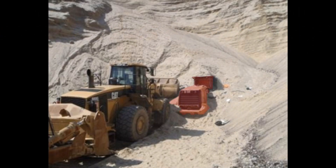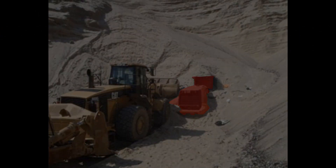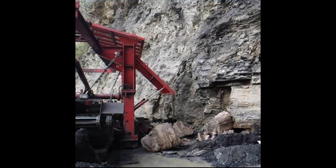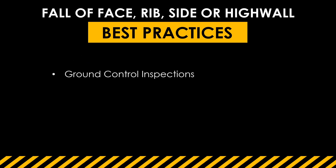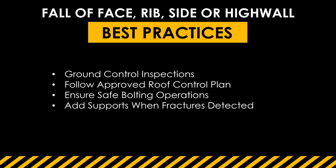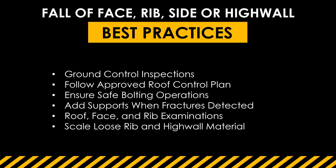You can barely see his machine in the photo. Another example: at a coal mine, a 33-year-old miner was struck by a rock that fell from the bottom section of the high wall while he was changing cutter heads. Best practices for avoiding these fatalities include employing ground control inspection procedures at all times, following approved roof control plans, ensuring safe bolting operations on a specified interval, adding supports when fractures are detected, performing examinations of roof, face, and rib, and scaling loose rib and high wall material in pre-shift operations.